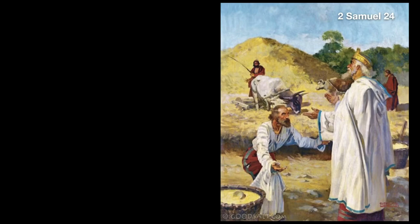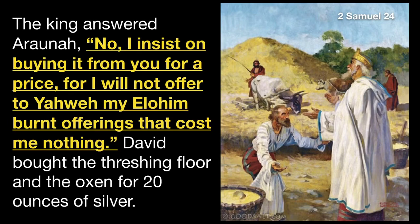David needed the animals to obey a commandment that a prophet named Gad had given to him. In 2 Samuel 24 verse 24 — you can also find this in 1 Chronicles 21 — David says to Arana: 'No, I insist on buying it from you for a price, for I will not offer to Yahweh my Elohim burnt offerings that cost me nothing.' David bought the threshing floor and the oxen for 20 ounces of silver. The point is this: a sacrifice is to be a sacrifice.